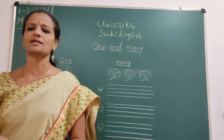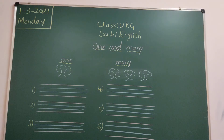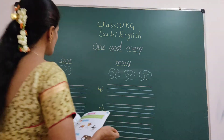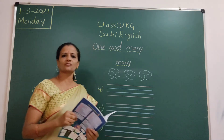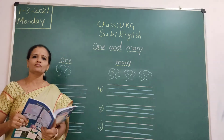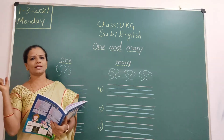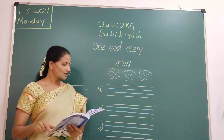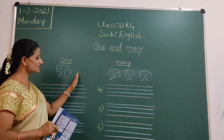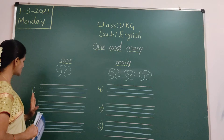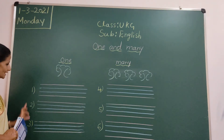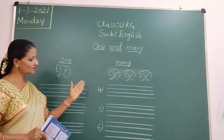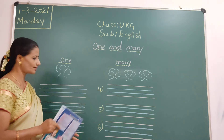Now we will start. Take out the workbook. English classwork. So we will write some words — one and many. I will show how to write. Take out the workbook, English classwork. In the first two pages we have to write six numbers.